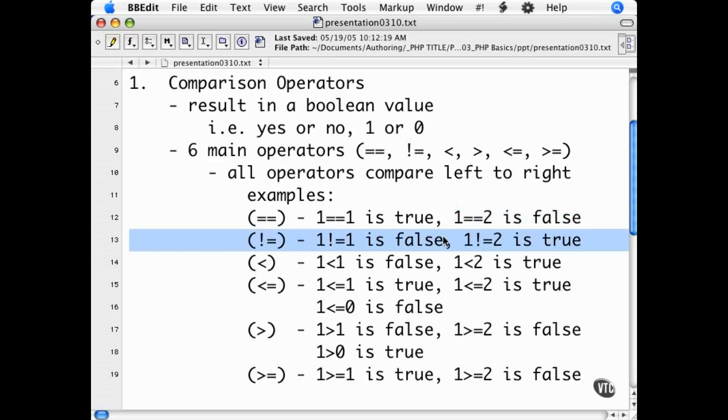The exclamation equals is the English equivalent to not equals. It compares the left and the right values to determine if they are different. If the left side does not equal the right side, it returns true.